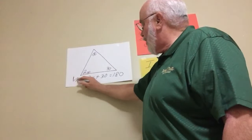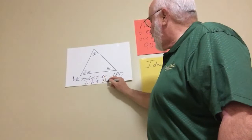Remember, this is 1 here. There's a 1 here. So now we have like terms. So we have 3x plus 30 equals 180.